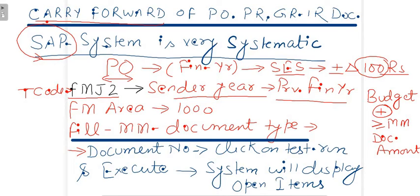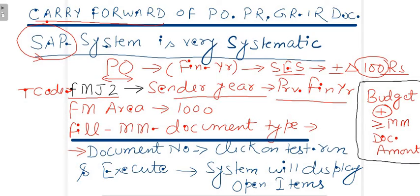Keep in mind that in each purchase order there is a commitment item — in OPEX there is a commitment item, while in CAPEX there is an IM node associated with the WBS. So when carrying forward MM documents from the previous financial year to the current financial year, there must be a positive budget greater than or equal to the MM document value available in the current financial year. This is a very important condition before executing transaction code FMJ2.